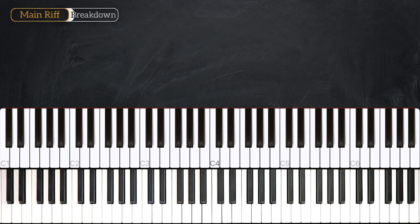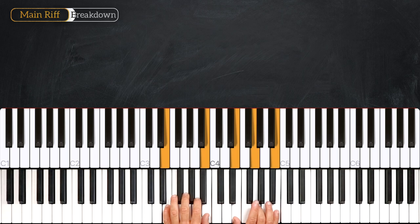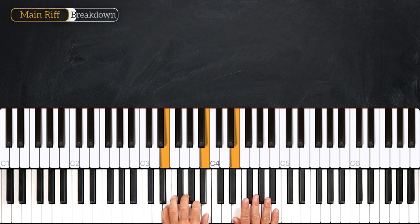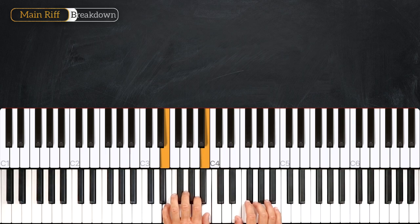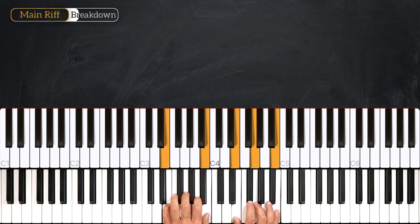Now let's break down the main riff. So we start on the E minor chord, like this. So we play E, B, E, G, B, E, G, B. Together 3, 4 and 1, 2, 3, 4.